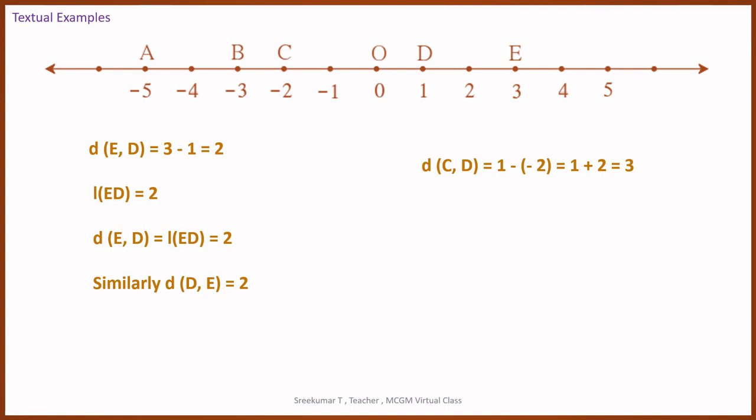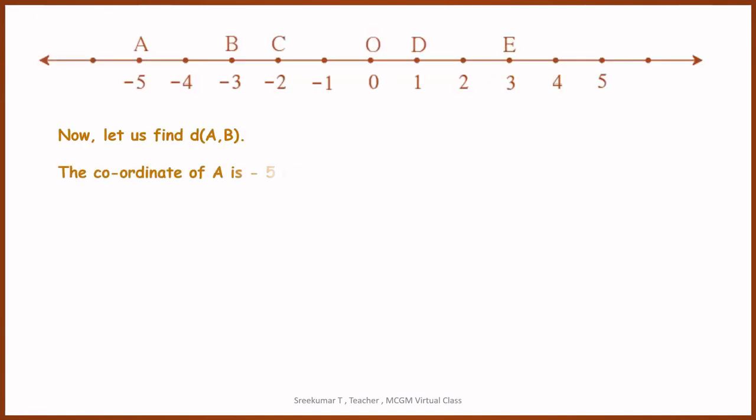The first one is already done. Second one is the distance between coordinate points C and D. C is here at minus 2, and D is here at 1. We are sure that 1 is bigger. So 1 minus minus 2, negative 2. Naturally, integer subtraction changes the sign. Minus 2 became plus 2, and subtraction becomes addition. And you get 3 by using the rules of addition. It is very simple again if integer addition and subtraction is known.